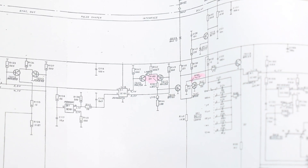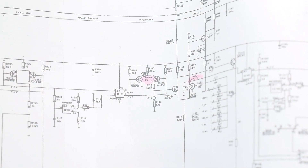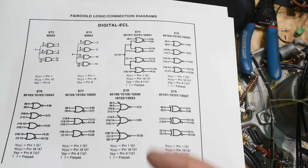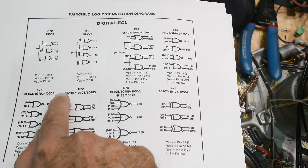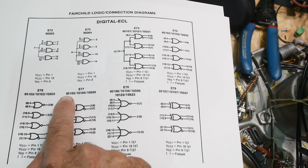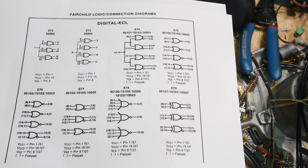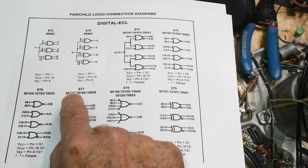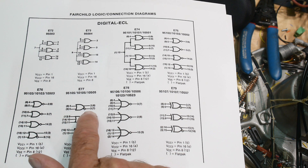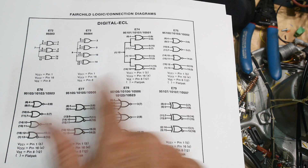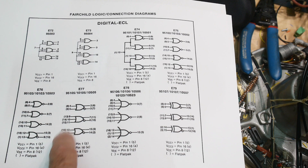I finally found not a data sheet but a data book - there was no data sheet for the part, but I found a 1978 data book from Fairchild. These are ECL parts and the part on the board is a 95105. It's two double-input OR gates and one triple-input OR gate - an OR/NOR device that outputs both the positive and negative of each output.